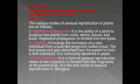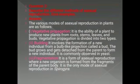Question number 2: describe the different methods of asexual reproduction. Give examples. The different methods of asexual reproduction are vegetative propagation, budding, and fragmentation. First, vegetative propagation: it is the ability of a plant to produce new plants from roots, stems, leaves and buds. Vegetative propagation is divided into two types.